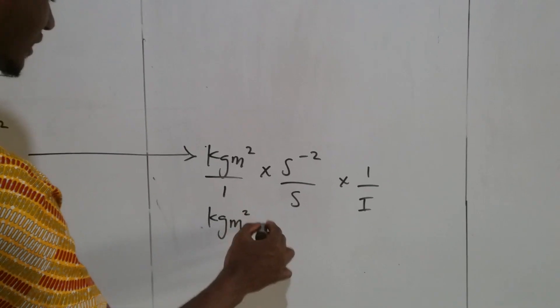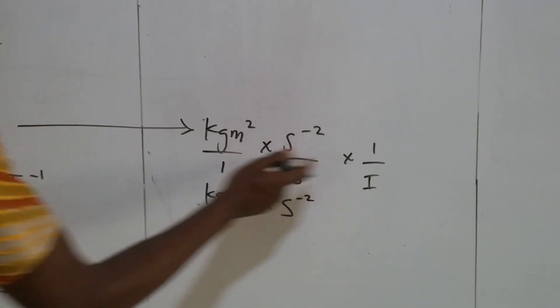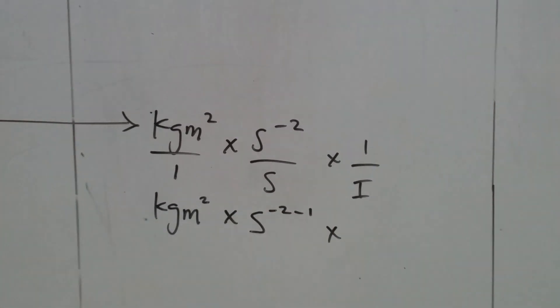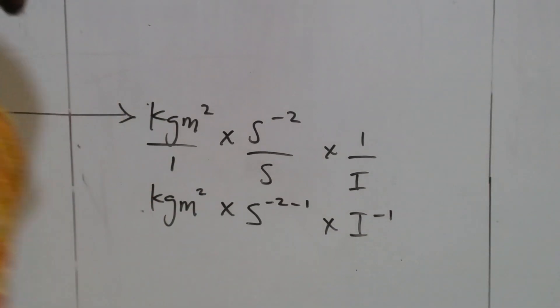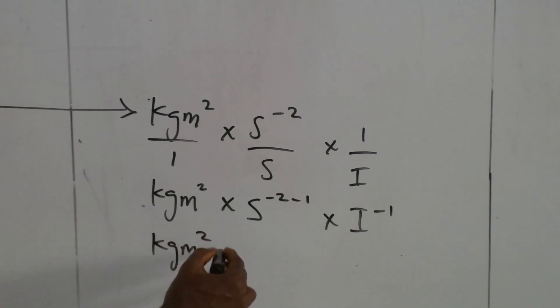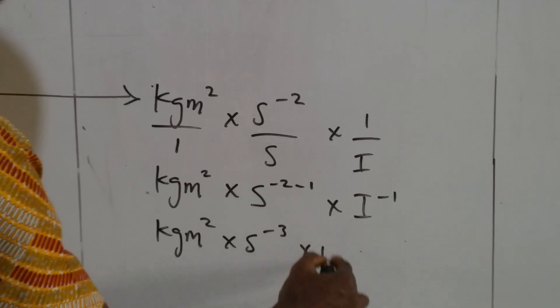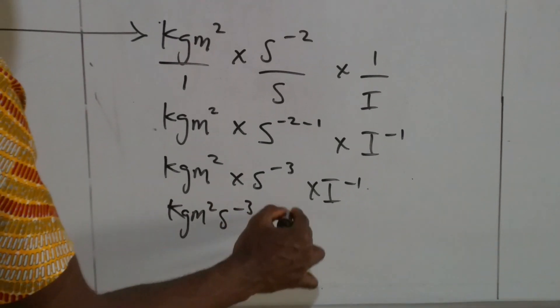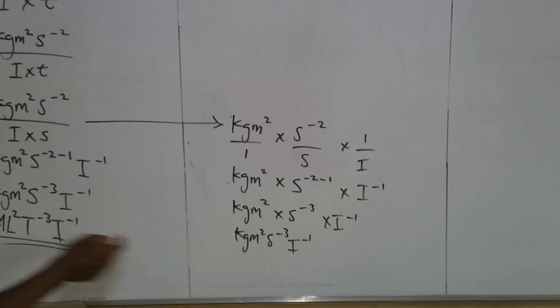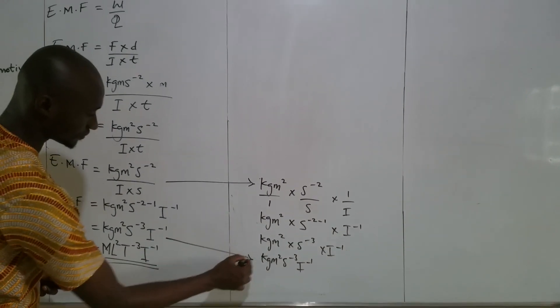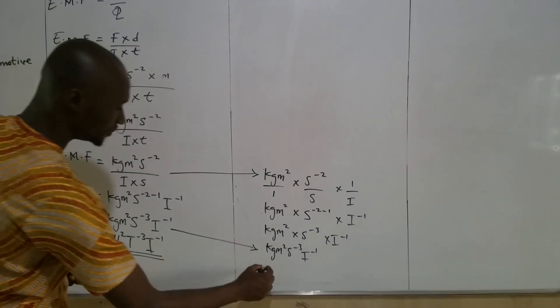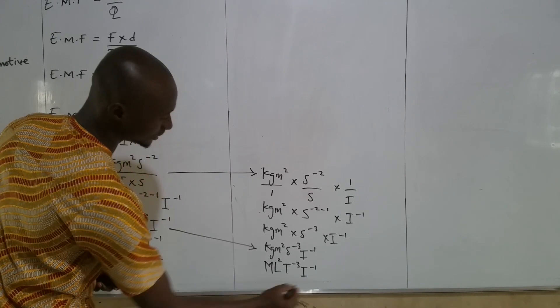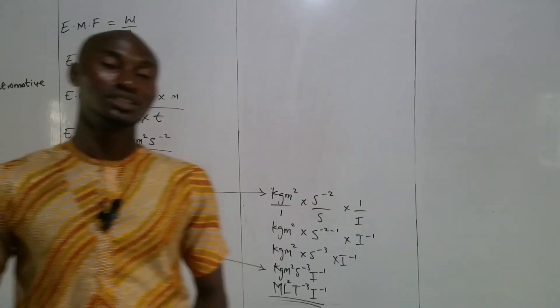Times 1 over I, negative index law, which is I⁻¹. So this is kg m² times s⁻³ times I⁻¹. This is going to give you kg m² s⁻³ I⁻¹. Have you seen that we got the same thing? From here, we still have M L², T⁻³ I⁻¹. Don't forget, I said something when I was making this video.